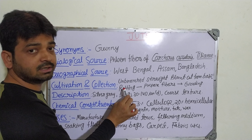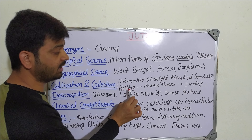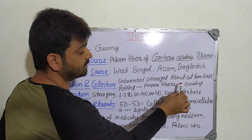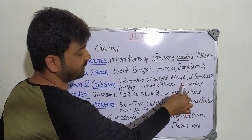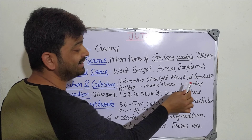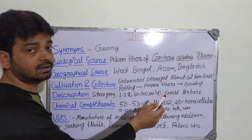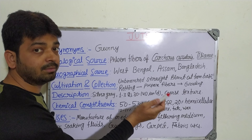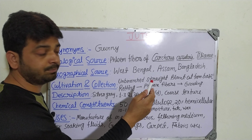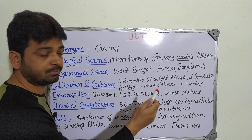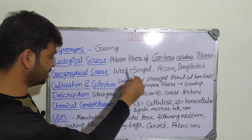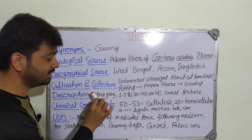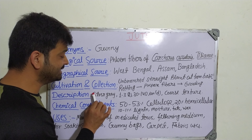A retting process has to be done to prepare the fiber. After getting the fiber, we have to grade it based on the category and level of purification. Coming to the description — whatever fiber we have got — how does it look?